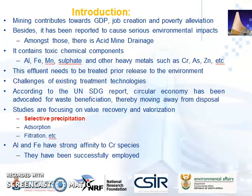That is where the United Nations Sustainable Development Goal report comes in, which advocates for circular economy in waste beneficiation, thereby moving away from waste disposal. Different studies have been focusing on value recovery and valorization. In value recovery, we talk about minerals that are recovered through different technologies such as precipitation, adsorption, filtration, and calcination, just to name a few. This study opted for selective precipitation in the recovery of a di-metal composite from authentic acid mine drainage. Different studies have reported that aluminum and iron have strong affinity to chromium, and the techniques thereof have been successfully employed. Hence, this study aimed to recover aluminum and iron as a di-metal composite from authentic acid mine drainage to remove chromium and Congo red dye from wastewater.